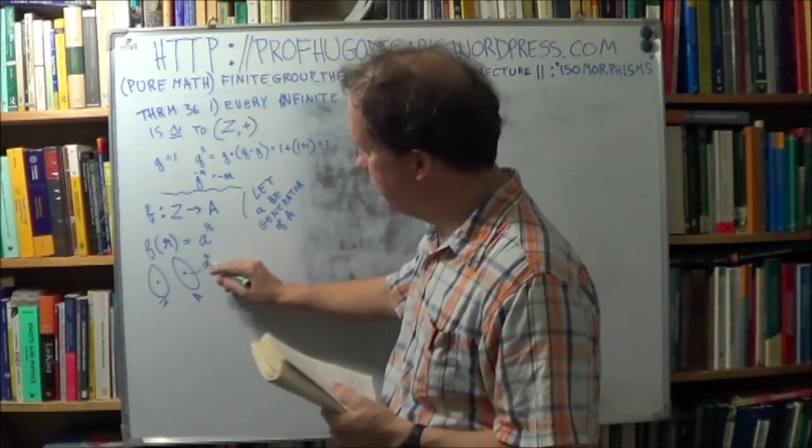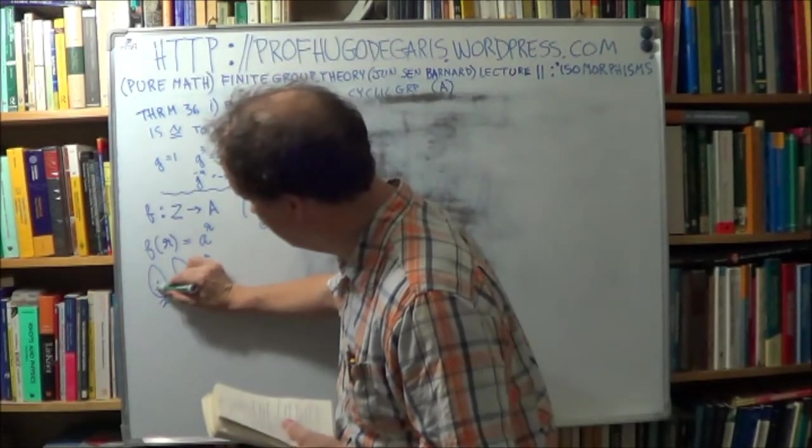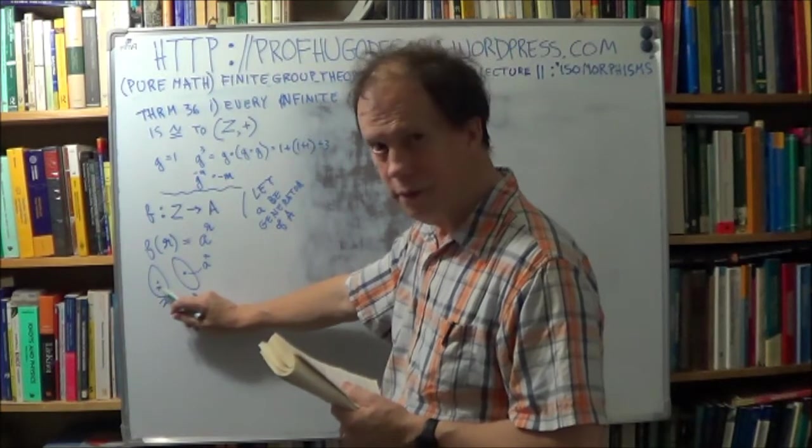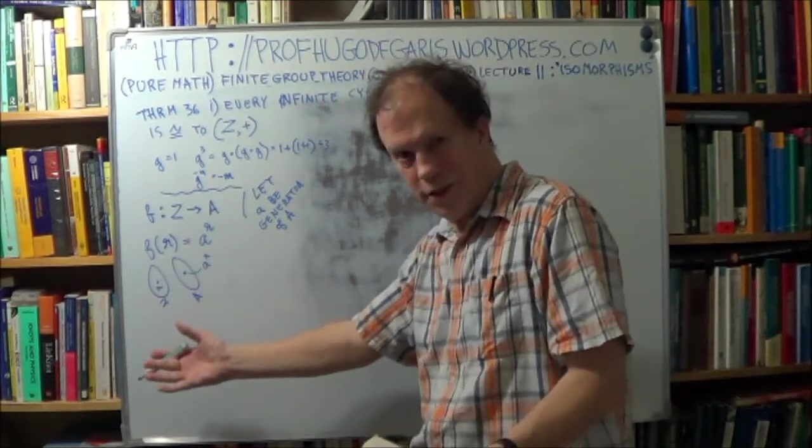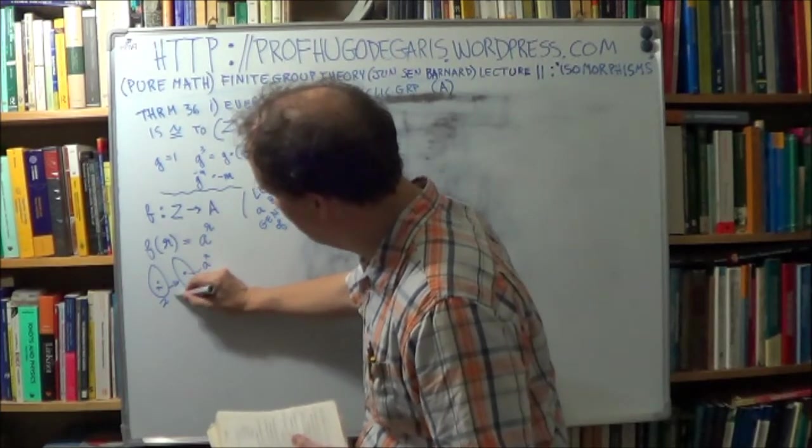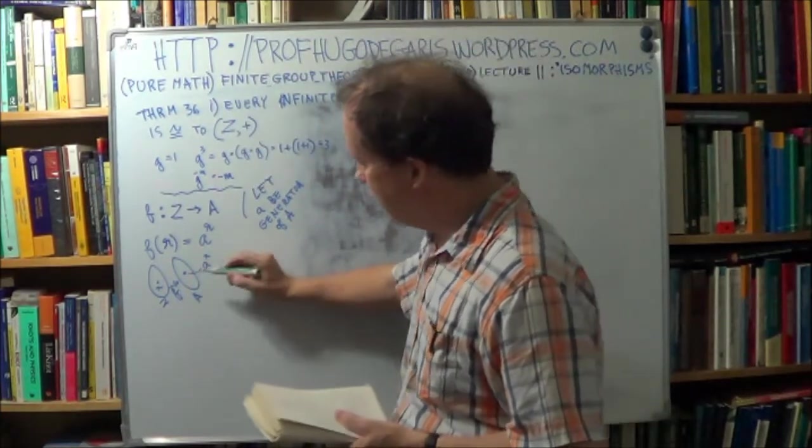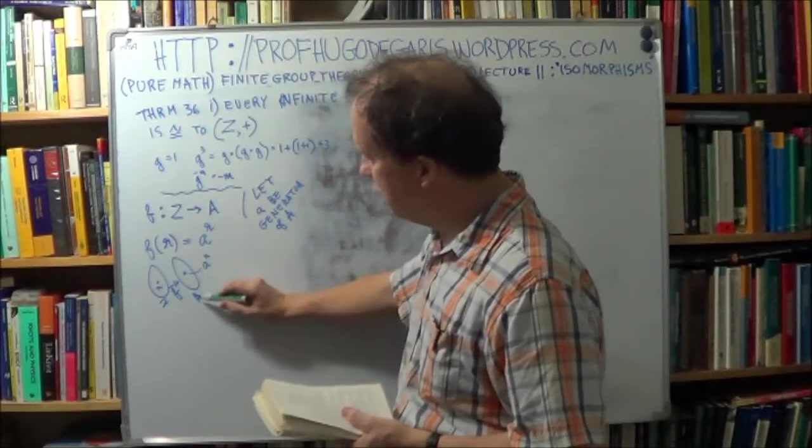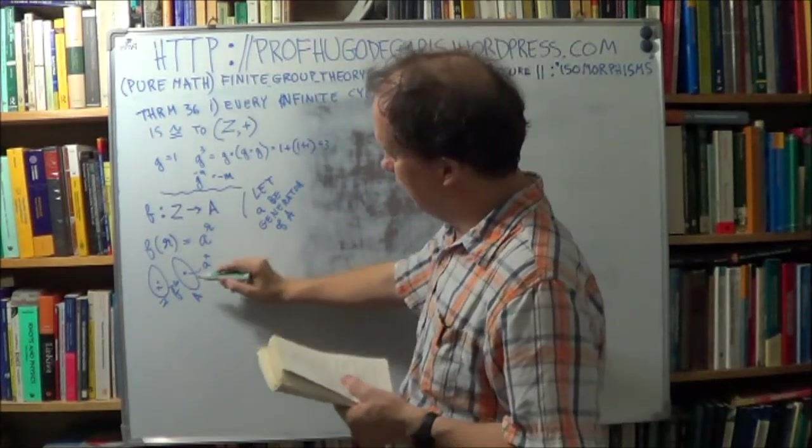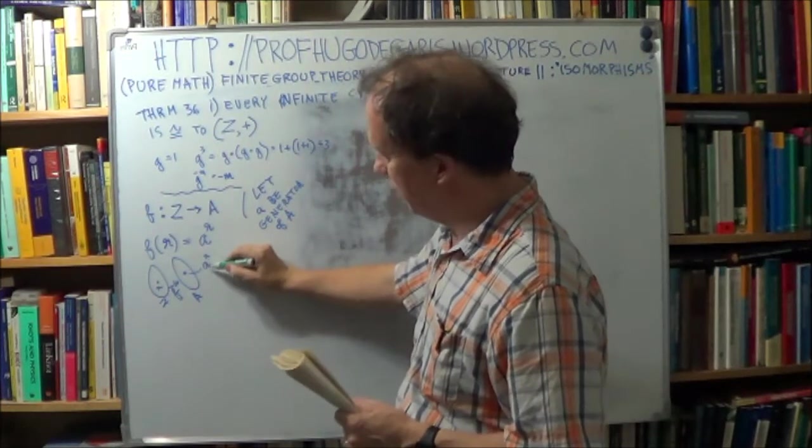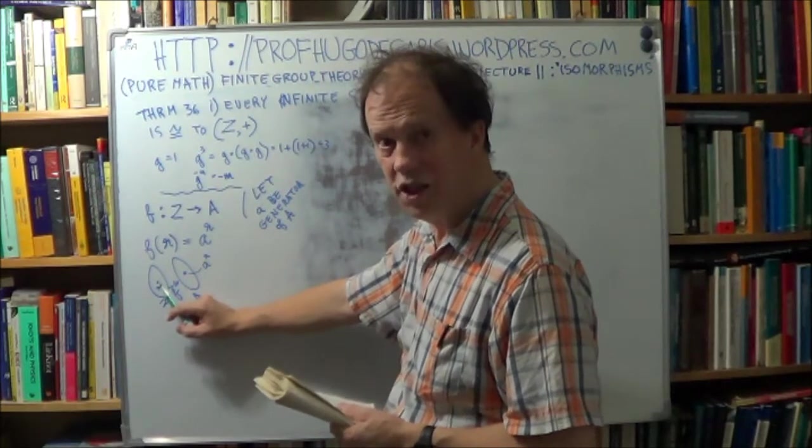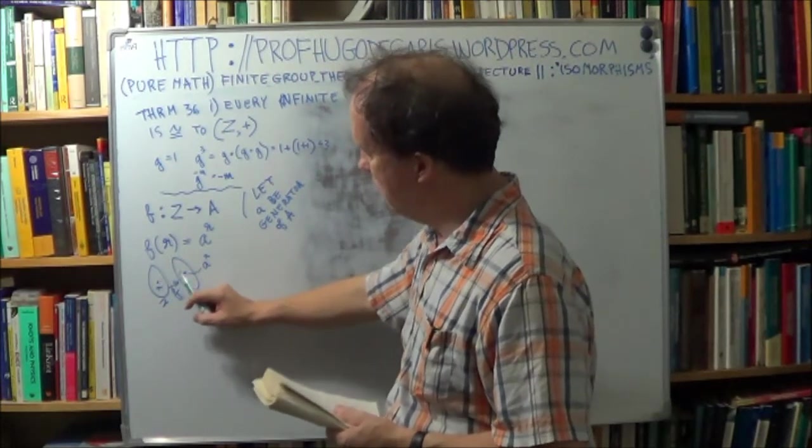If it's surjective, every element in this target set, the codomain, is mapped to, okay? Now, this one gets mapped by what? Well, by R, right? So for every A to the R, there's an R here. Okay? That's the proof of this F. So for every element in your infinite cyclic group, of the form A to the R, there will be an element here, R, the integer R, that maps to it, right?